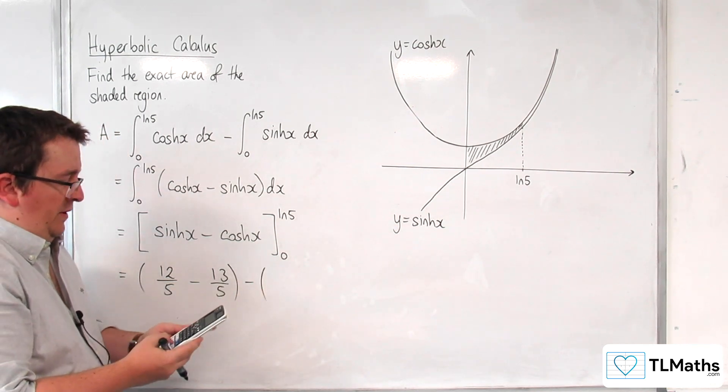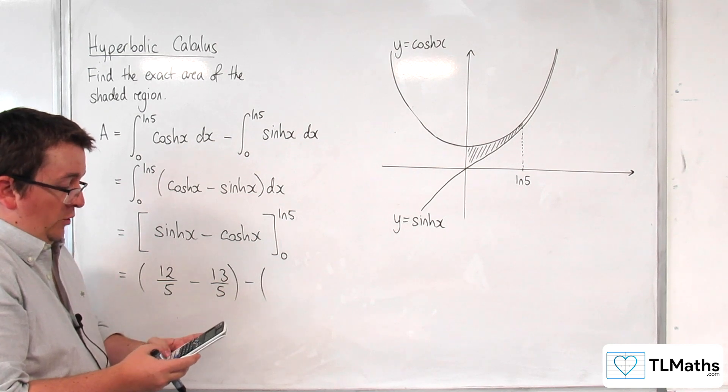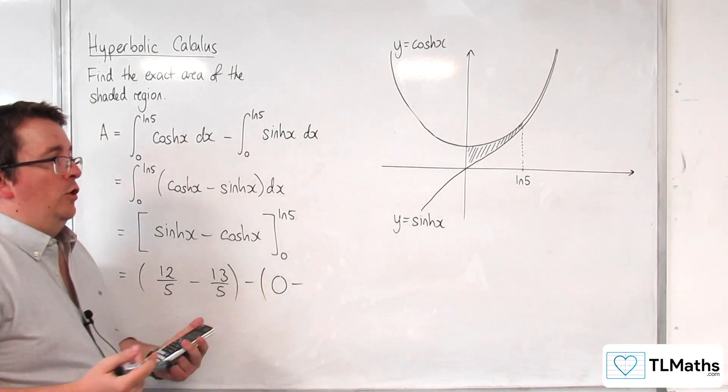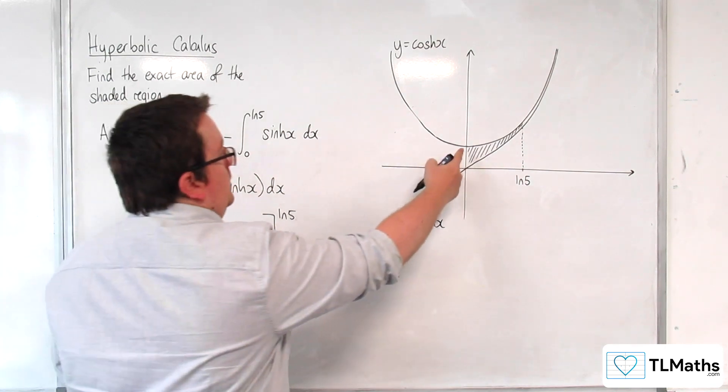Then substituting in 0. So sinh of 0 is 0. And cosh of 0 is 1.